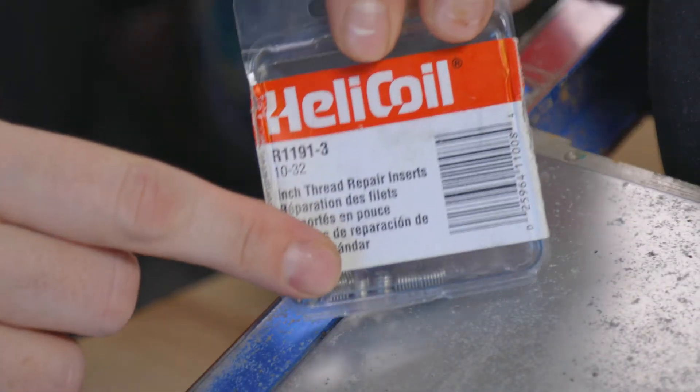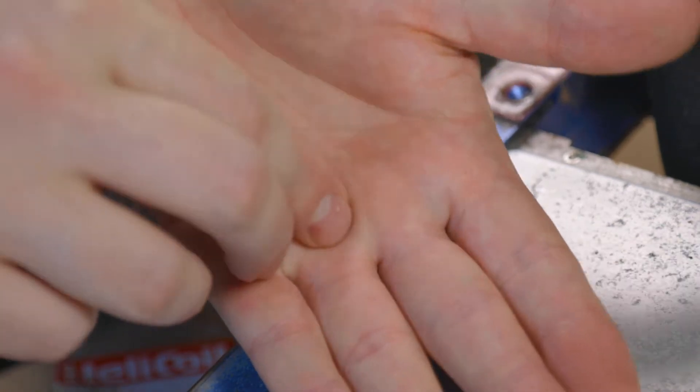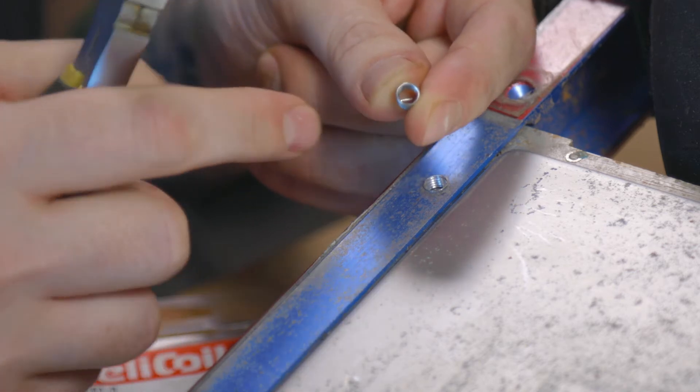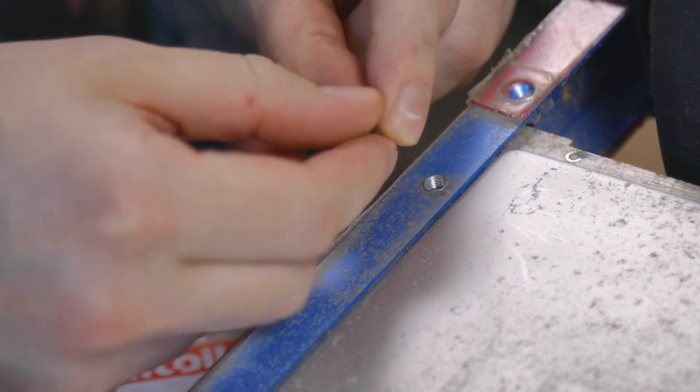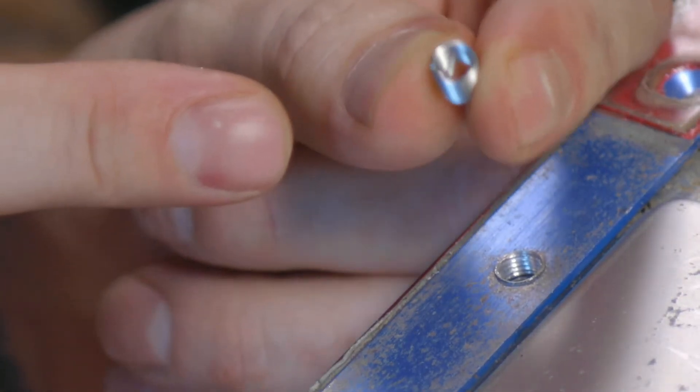Alright so now we're going to go and grab a helicoil. I've got one right here. They're a little bit long for these rails. So I'm going to take a pair of pliers. I'm going to trim a little bit of this off. Now there's two sides to this. It's hard to see on camera here. One side has what they call a tang.